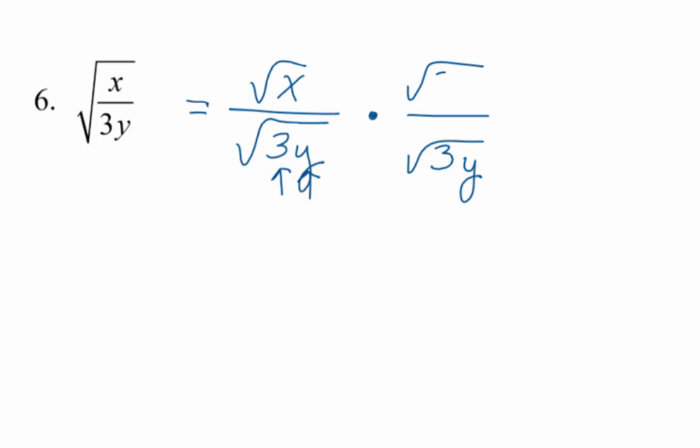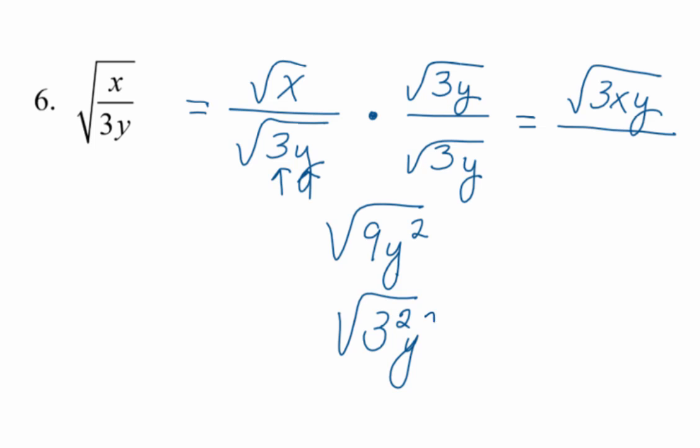Anything we do to the denominator, we do to the numerator. Multiply across, we get square root of 3xy in the numerator over. So this is the square root of 9y squared, or if you want to think of this as 3 squared y squared, because you just put two threes there. And so again, square rooting a square, these are inverse operations. So if this is just 3y, then that's our answer.